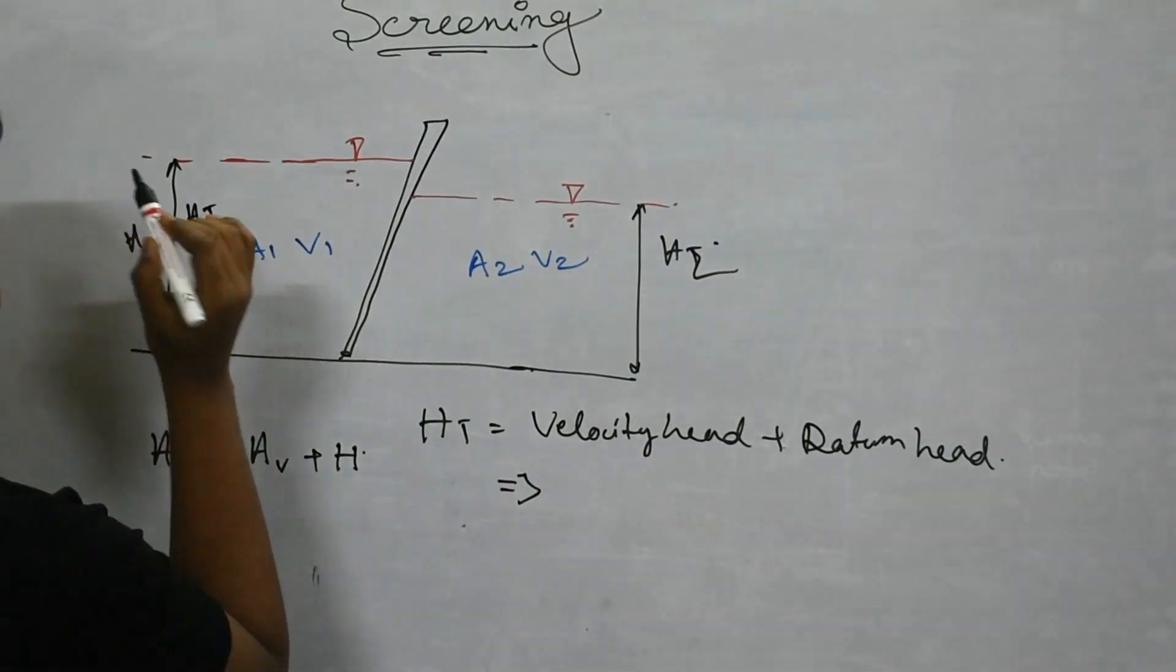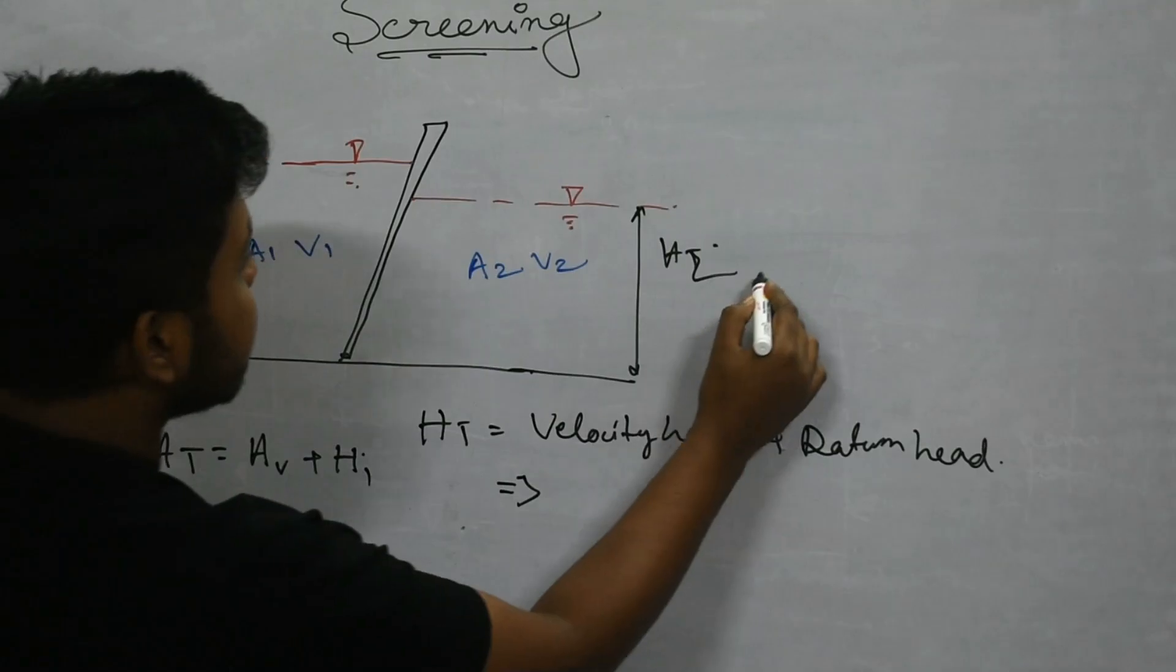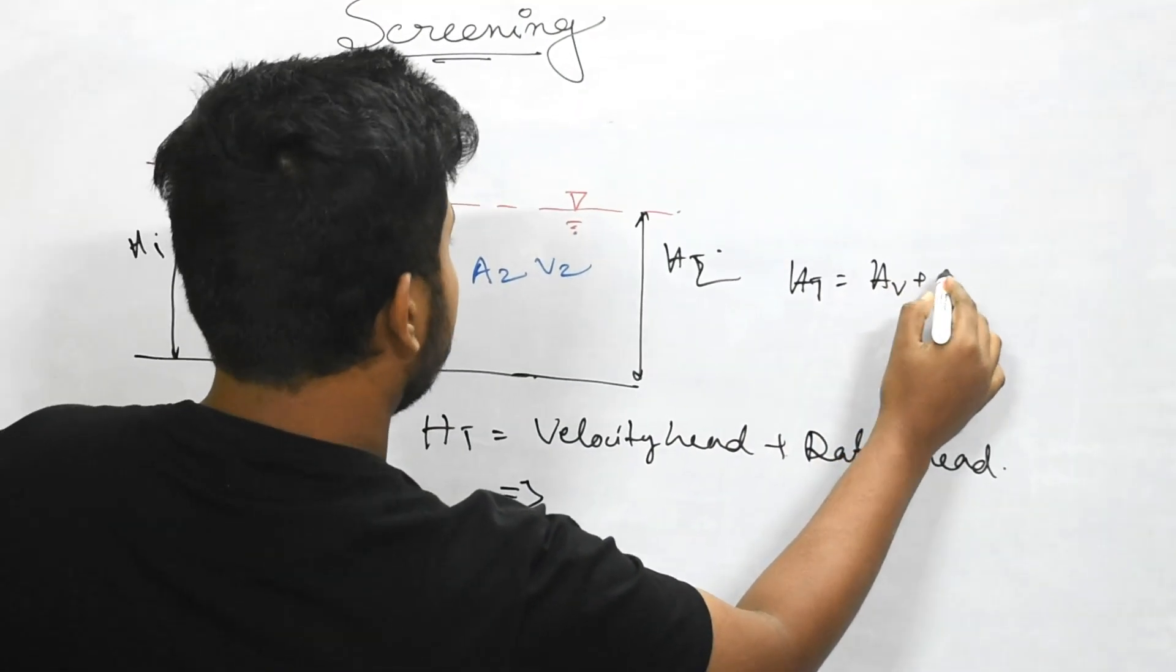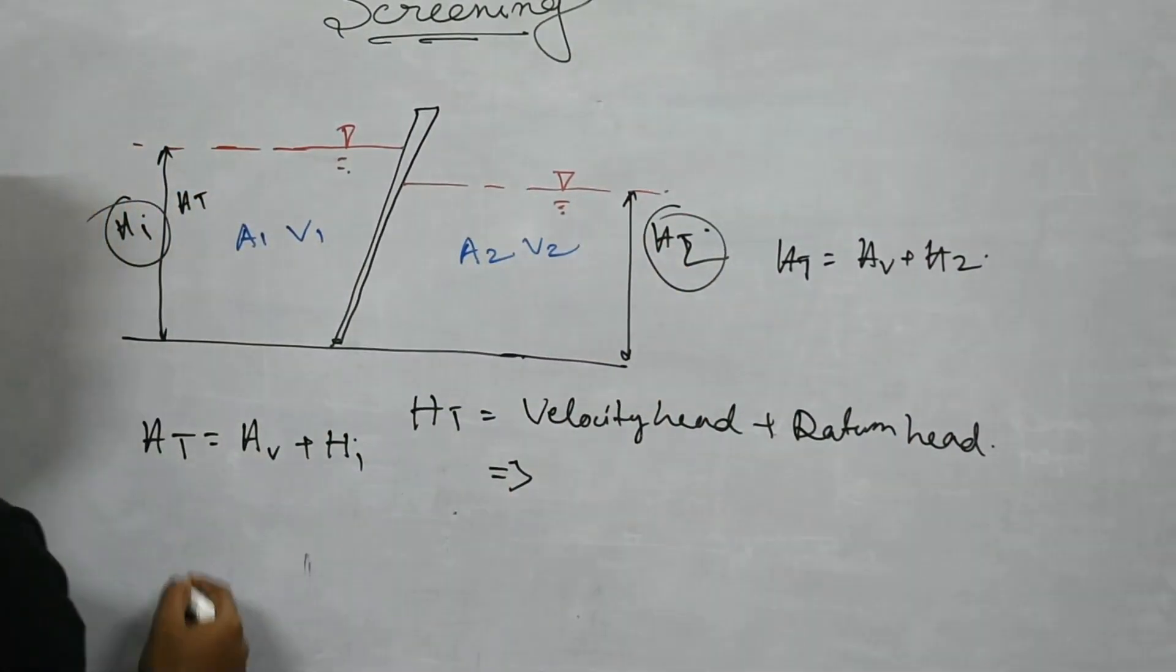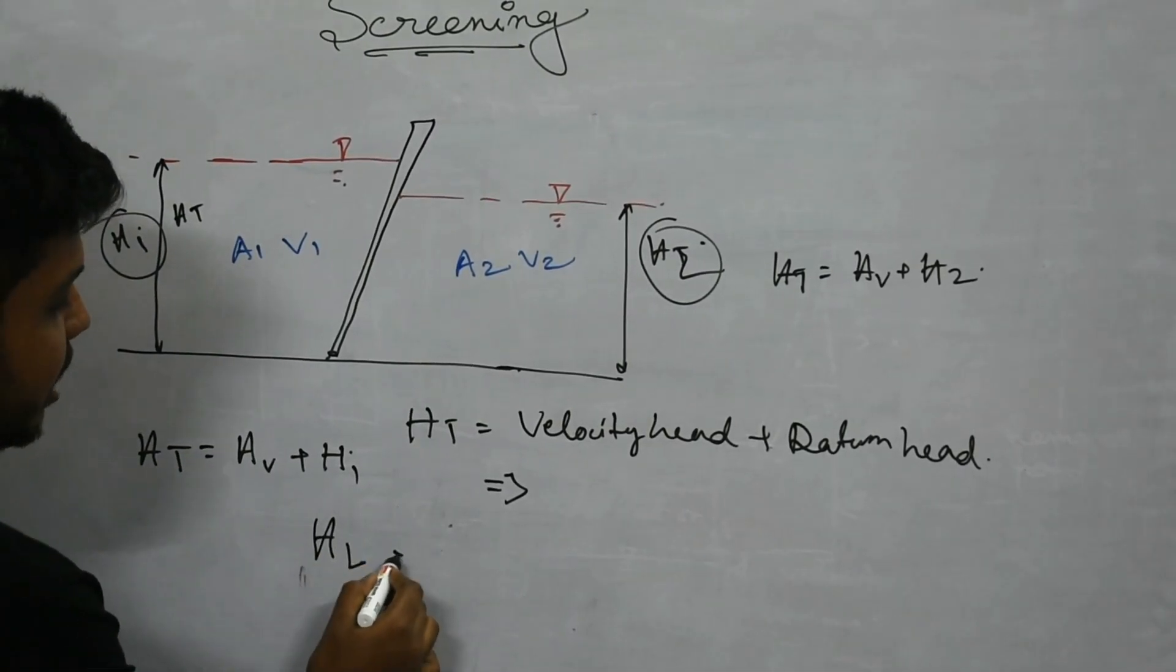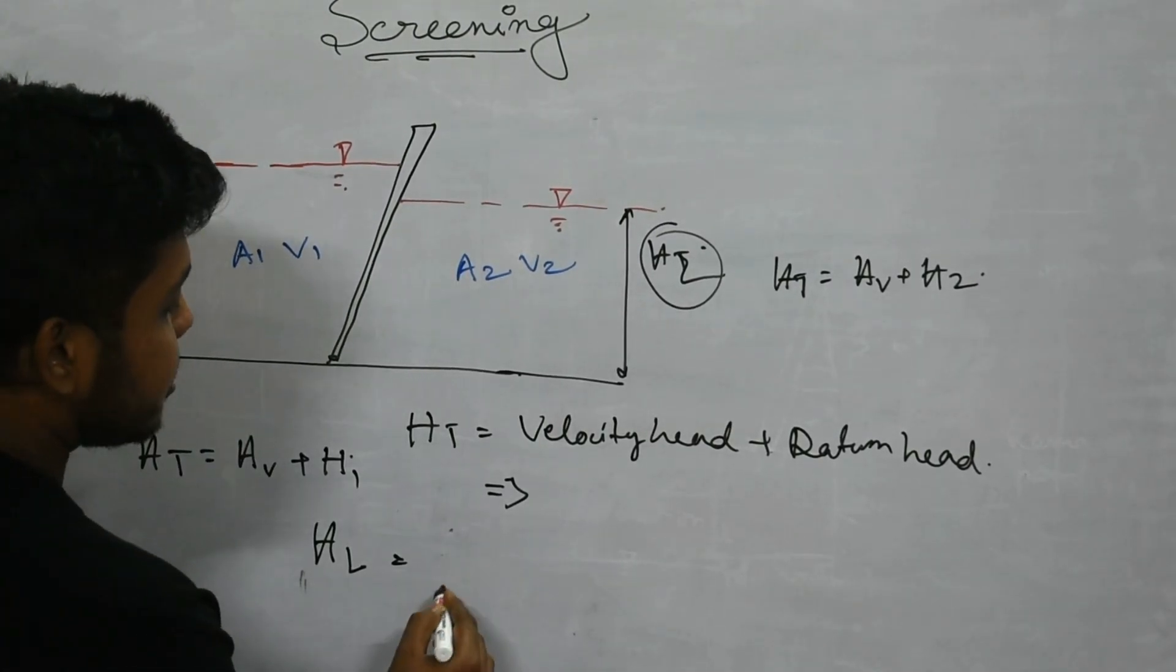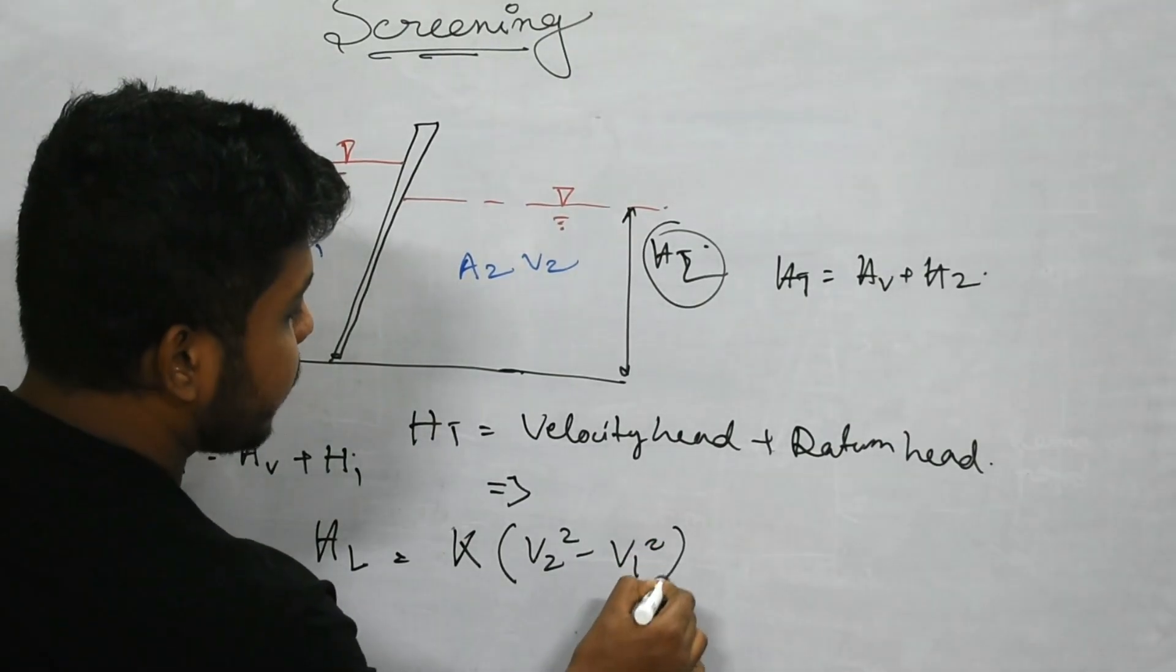For this case h2 equals h velocity plus h2. These h1 and h2 are not the same and this is causing the head loss. The empirical formula for this head loss is k into v2 square minus v1 square divided by 2g times 0.7.